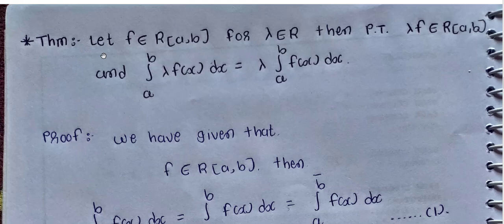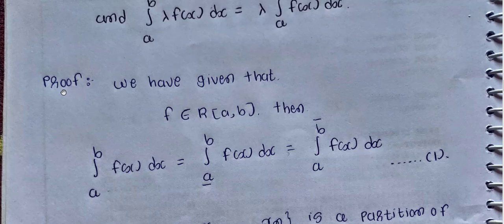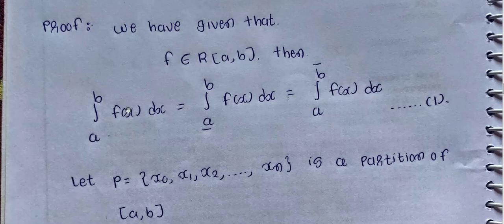Next theorem: Let f be Riemann integrable on closed interval [a,b], and let λ be a real number. Then prove that λf is also Riemann integrable on [a,b], and the integral from a to b of λf(x) dx equals λ times the integral from a to b of f(x) dx. Since f is Riemann integrable on [a,b], by the first definition of Riemann integral, the integral from a to b of f(x) dx equals the lower Riemann integral equals the upper Riemann integral. This is equation number one. Let P = {x₀, x₁, x₂, ..., xₙ} be a partition of [a,b].